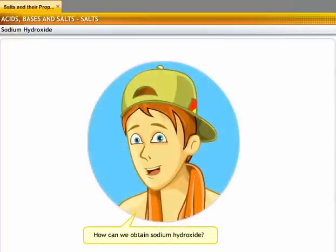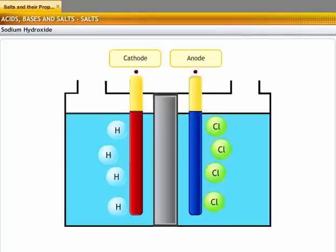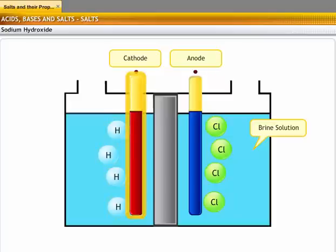How can we obtain sodium hydroxide? Sodium hydroxide is produced by the electrolysis of aqueous solution of sodium chloride called brine. The electrolysis of brine is called the chloralkali process since the products formed are chlorine and an alkali. In the process of electrolysis of brine, hydrogen is collected at the cathode and chlorine at the anode.